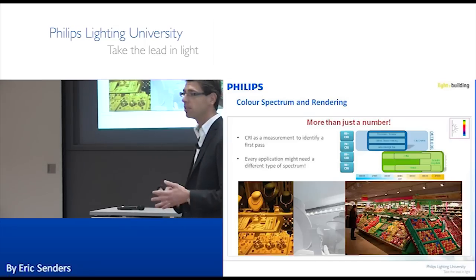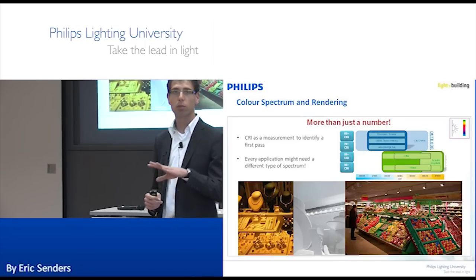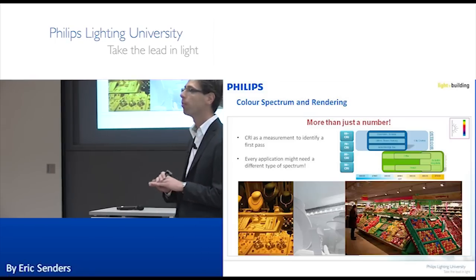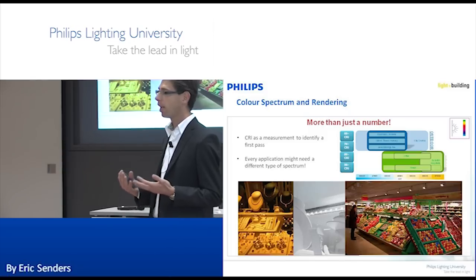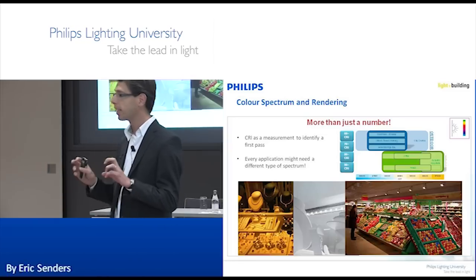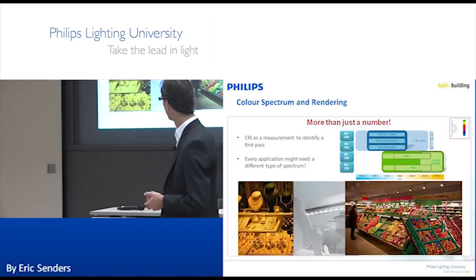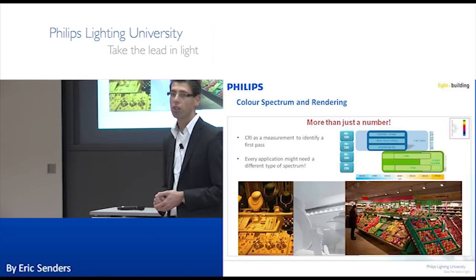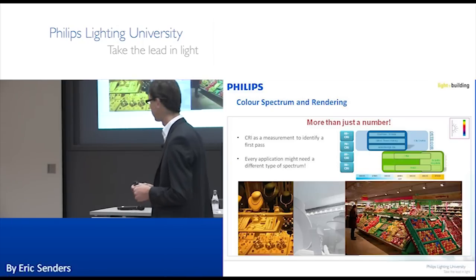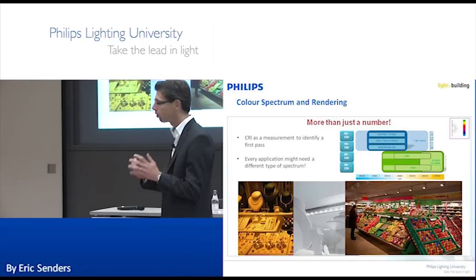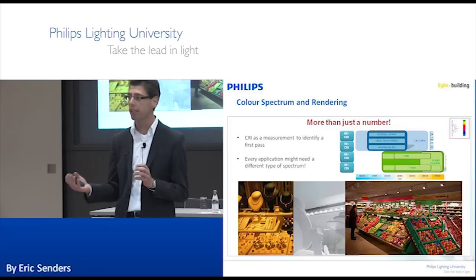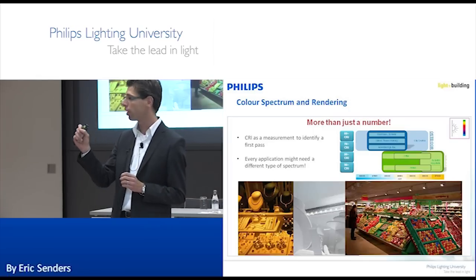Also for meat, the R9 value is important if you want specific red rendering. Red rendering is critical for apples, tomatoes, or even in a bakery. People see much fresher food without faking it — in grocery stores or anywhere red needs to be enhanced.